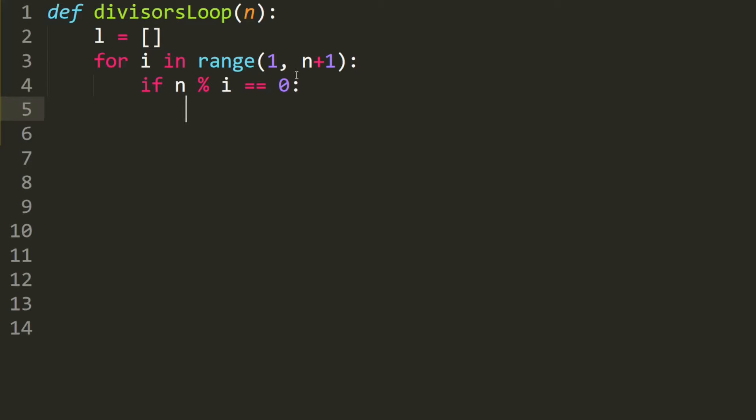then we basically add i into the list. So l plus equals the list of i. And then after this loop, we should return the list. So return l.